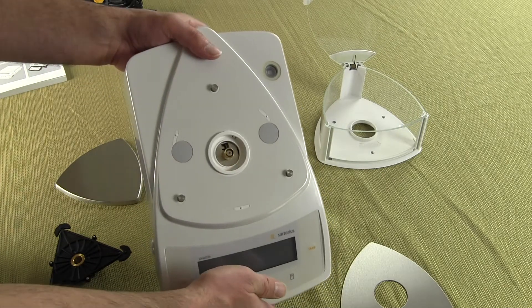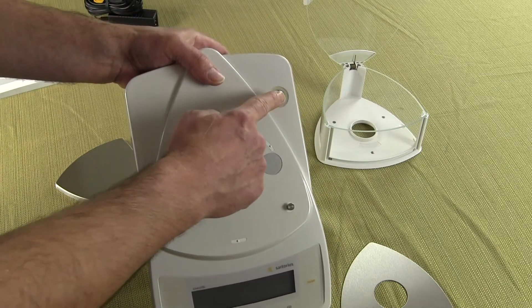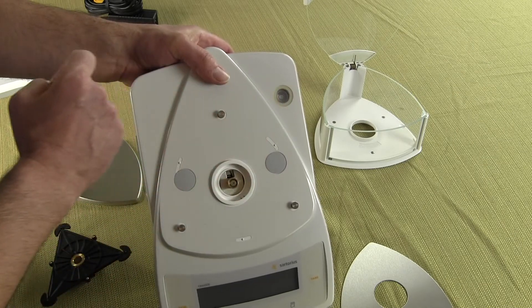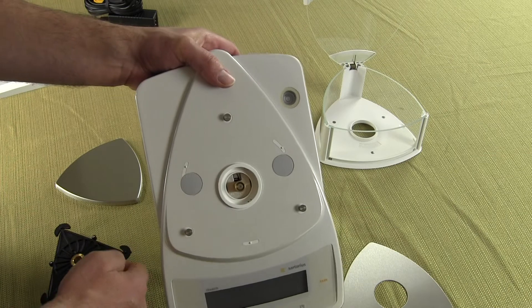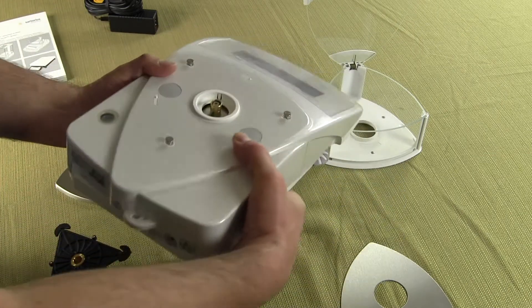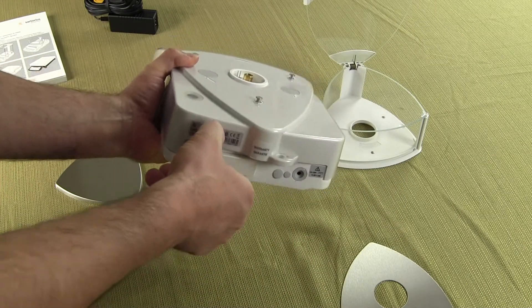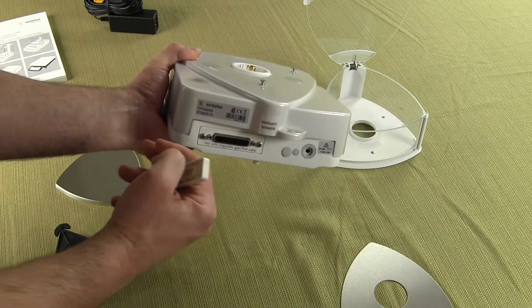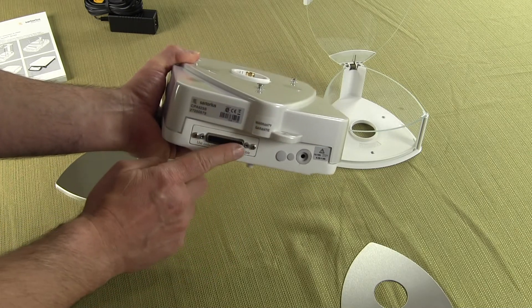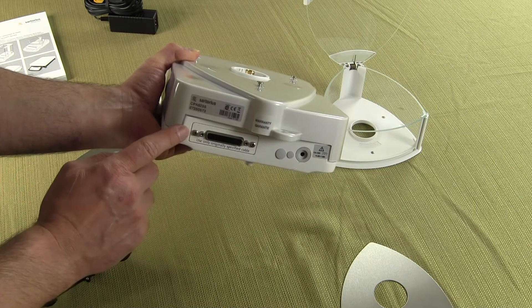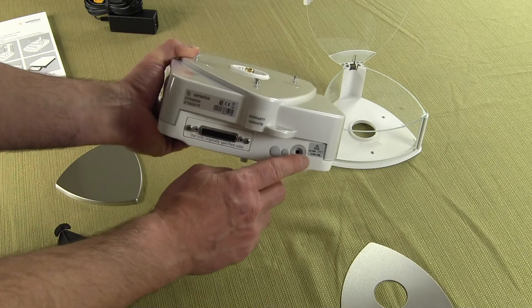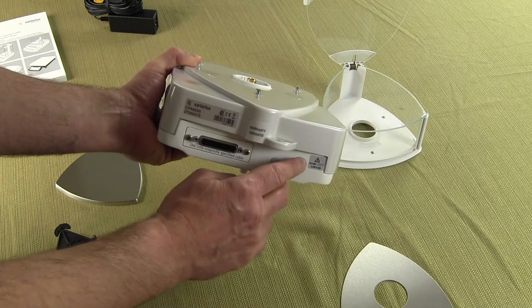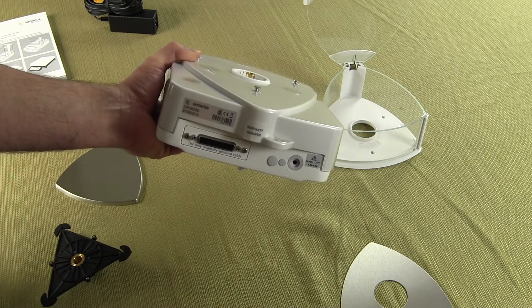So the balance here in the upper right hand corner has a spirit bubble indicator. This is for leveling the balance. And in the rear of the balance we have here this is for an RS-232 interface or a printer. So the Sartorius printer would plug into here or an RS-232 interface. This here is our power receptacle where we're going to plug our AC adapter in.